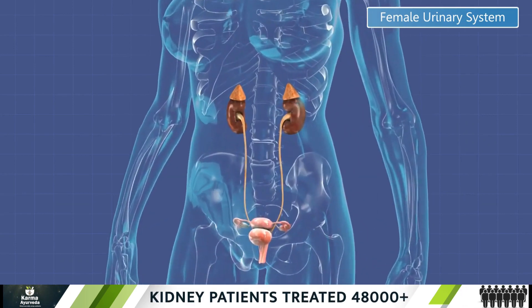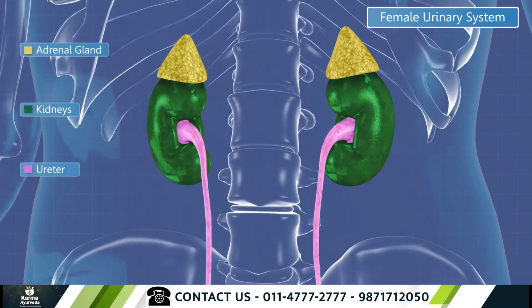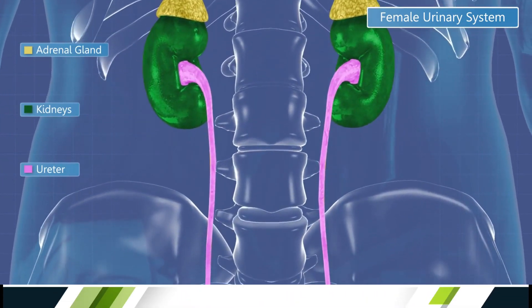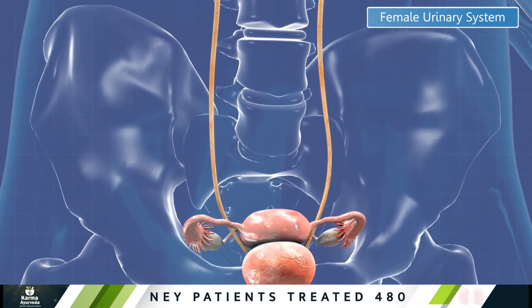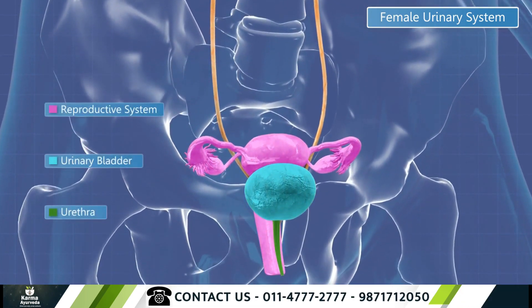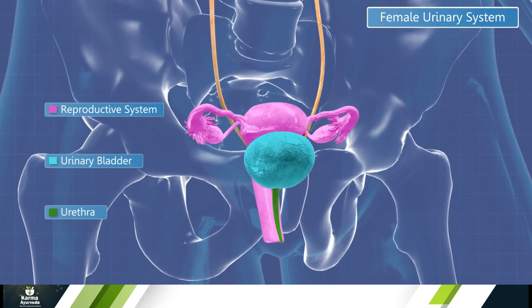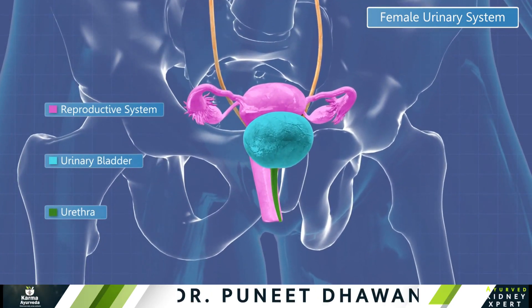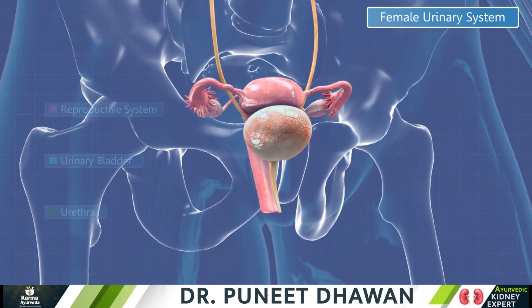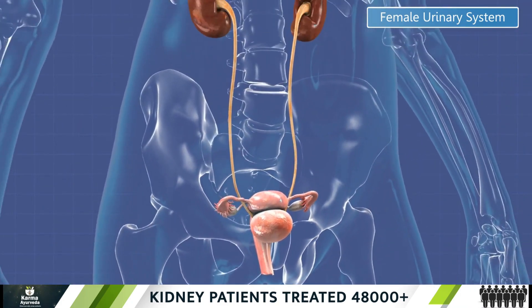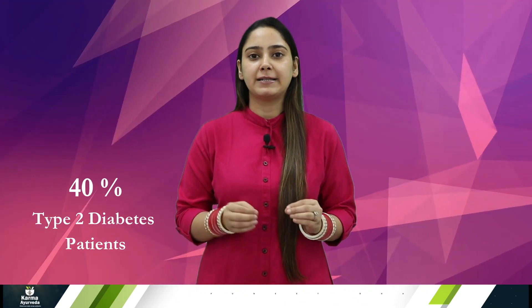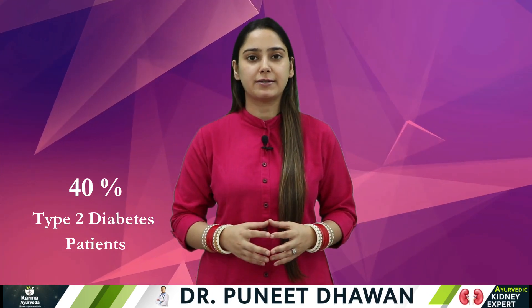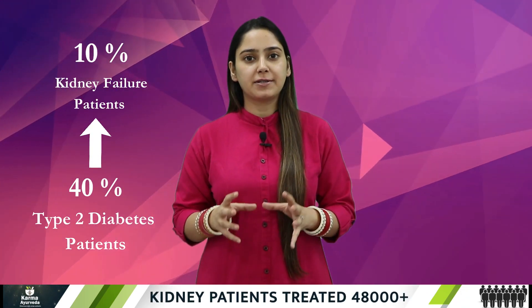Unremoved excess waste in your blood and body starts accumulating. Diabetes also weakens or damages your nerves, making it difficult to empty your bladder. The pressure caused by a full bladder can damage your kidneys too. When urine remains in your bladder for a long time, you can develop a bacterial infection. About 40 percent of Type 2 diabetes patients suffer from kidney disease, and about 10 percent of these patients suffer kidney failure.